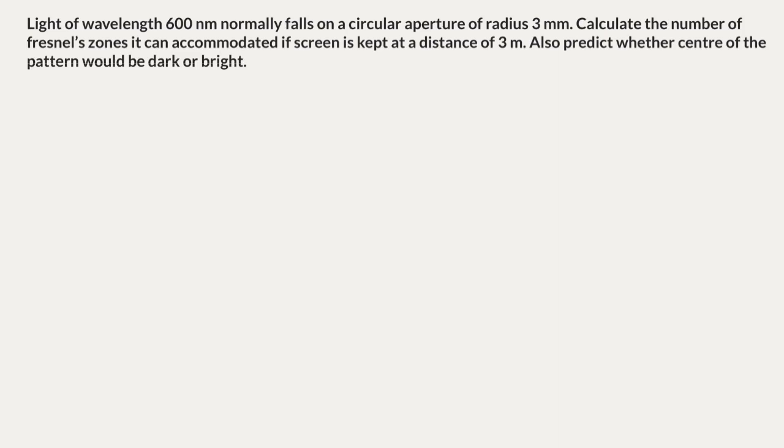The question given to us is: light of wavelength 600 nanometers normally falls on a circular aperture of radius 3 mm. Calculate the number of Fresnel zones it can accommodate if a screen is kept at a distance of 3 meters. Also predict whether the center of the pattern would be dark or bright. Let us first write what is given to us.